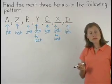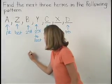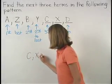So the three missing terms in our pattern are C, X, and D.